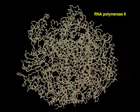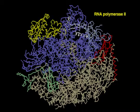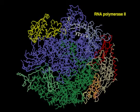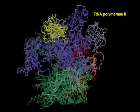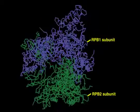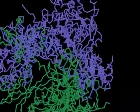Eukaryotic RNA polymerase II transcribes all messenger RNA molecules in the cell. It is a huge complex of 10 different protein subunits. The active site of the enzyme lies at the interface between the two largest subunits.